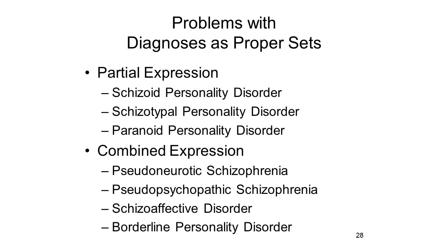The view of the diagnostic categories as proper sets, organized by symptoms that were singly necessary and jointly sufficient to define each diagnosis, was extremely popular and very satisfying until people began to actually work with it. This traditional view then quickly encountered problems of the sort familiar from our earlier critique of the classical view of categories as proper sets. The simple fact was that very few patients actually resembled the textbook descriptions of various syndromes. First, there was a problem of partial expression: many patients displayed some but not all of the symptoms that defined a particular syndrome. In the case of schizophrenia, this led to the introduction of new syndromes such as schizoid personality disorder, schizotypal personality disorder, and paranoid personality disorder.